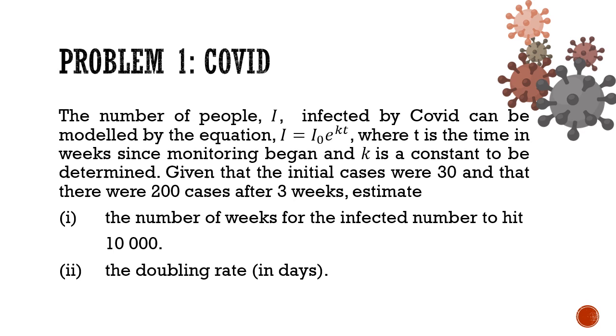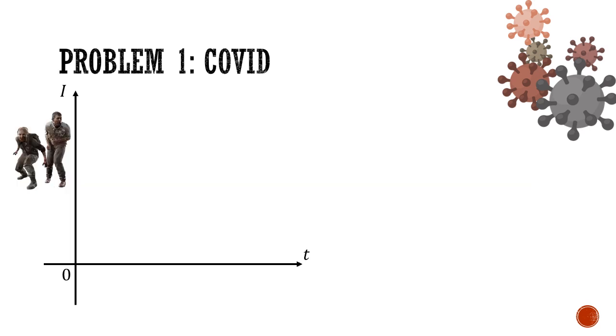Given that the initial cases were 30 and that there were 200 cases after 3 weeks, estimate part 1 the number of weeks for the infected number to hit 10,000 and part 2 to estimate the doubling rate in days. Pause the video here and give this question a good try. So let's make a quick sketch of the problem. Since COVID is exponential, it grows like this. And since the initial cases are 30, we can sub in i equals 30 and t equals 0 and this will tell us that i0 is 30.